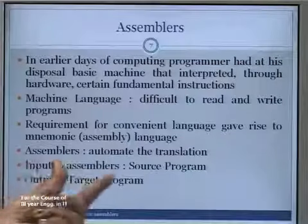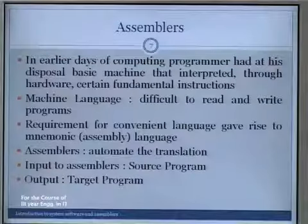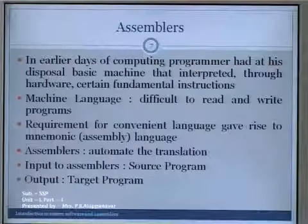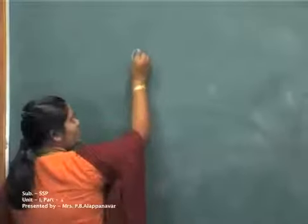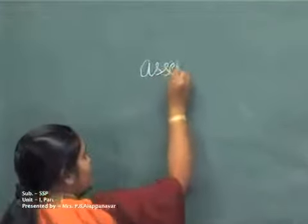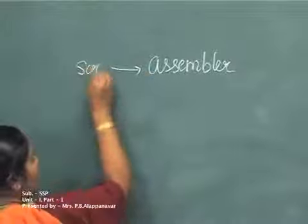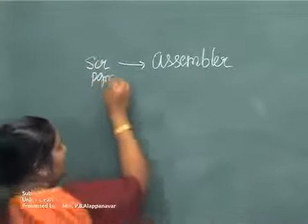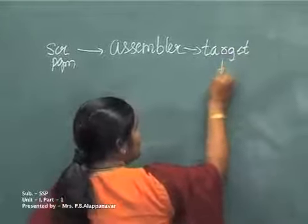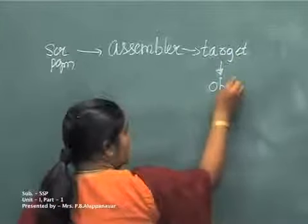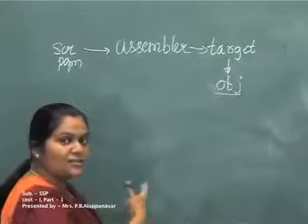To your assembler you will input a source program written in assembly level language, and your output will be a target program present in machine level language. When we had an assembler, it would take a source program and convert it into the target program. This target program happened to be your object code, which needed to be placed in memory for execution.